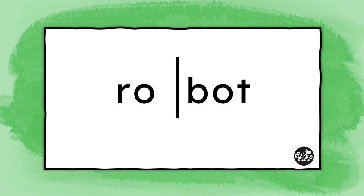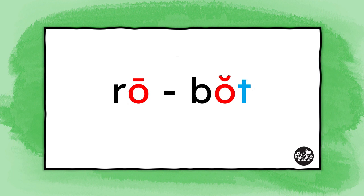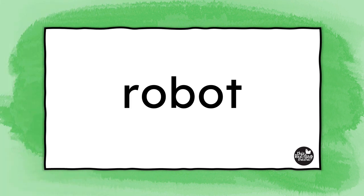Once the longer word is divided, encourage your readers to look at each syllable. What do they see on the end of the first syllable? It's an O, but it's not closed in by a consonant, so it's going to make its long sound — ro. Now take a look at the second syllable. It has a single vowel, but it's closed in by a consonant. That means it's a closed syllable and the vowel will be short — bot. Put them together: ro-bot. Robot.